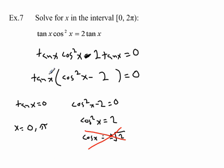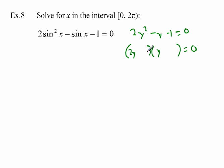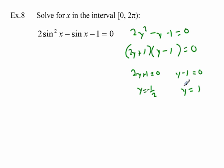When factoring, sometimes one factor gives no solutions and sometimes both give solutions. For the next example, it looks unfactorable at first — but consider the equivalent algebraic expression 2y² - y - 1 = 0. That factors as (2y + 1)(y - 1) = 0, giving y = -1/2 and y = 1. You've done this hundreds of times in algebra 2.